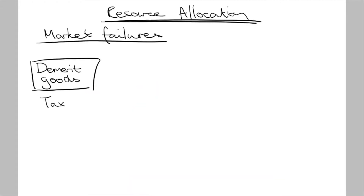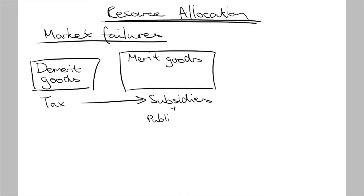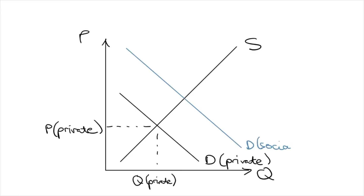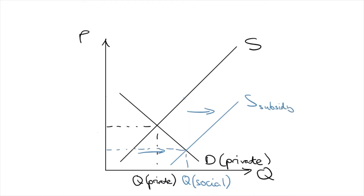Fiscal policy could also allocate more resources into goods and services that are underproduced, such as merit goods and public goods. Merit goods have positive externalities — environmental and social benefits not taken into account by the price mechanism. The government can allocate resources to those underproduced goods via subsidies, which lower the cost of production, shifting the supply curve to the right, lowering the market price and producing a larger quantity.